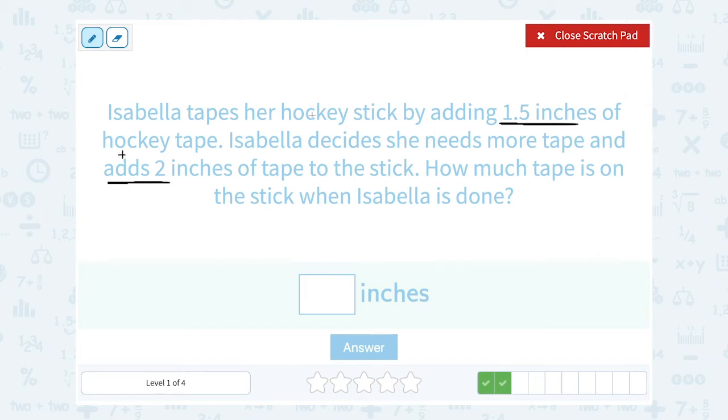So I want to say 1.5 plus 2. Now when you're adding with decimals, it's helpful to write both numbers as decimals. 2 is the same thing as 2.0. And then we're going to add our numbers. Make sure that our decimal points are all lined up. In the tenths place, 5 plus 0 is 5. And in the ones place, 1 plus 2 is 3. So that's going to give me 3.5 inches of tape on her stick.